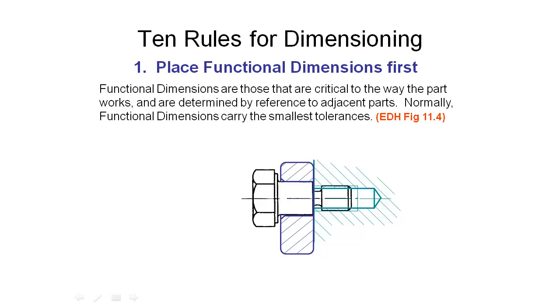The first rule or recommendation is to always try and place your functional dimensions first. Your functional dimensions are those that are critical to the way that the part or the assembly is going to work, and so if these aren't right or if these aren't clear then your part or that assembly may not work properly.